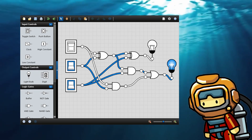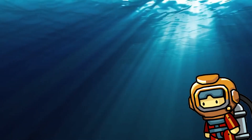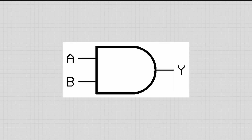First up is the AND gate. This gate will only give an output of one — the output is represented by Y — it'll only give an output of one if A and B, which are the two inputs, are also equal to one. Any other combination will give you zero for Y, which means the result will be off. The AND gate is represented by a shape that looks like a plug.